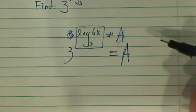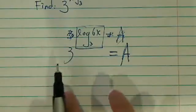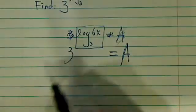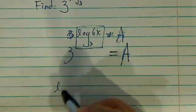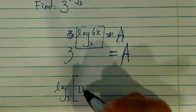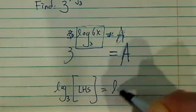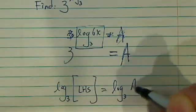The reason we want to do that, that gives you a chance to take a log base 3 on both sides to get the exponents done. So if we were to do that, log base 3 of left-hand side is equal to log base 3 of a.